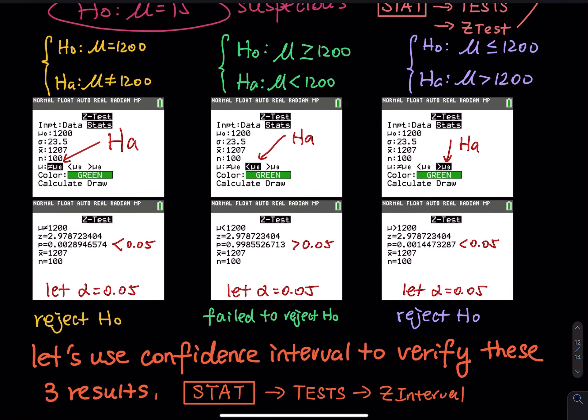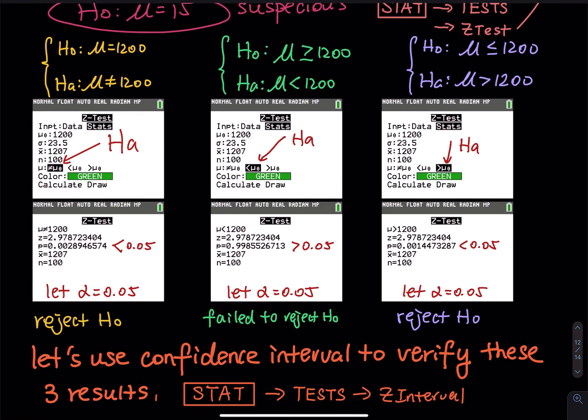I am going to use a confidence interval to verify these three results. To build a confidence interval, you go to STAT, press the STAT key, then go to TEST, and look for z-interval — we discussed that in the previous video where we discussed confidence interval.